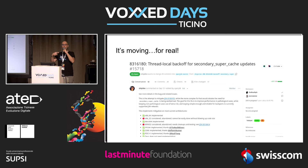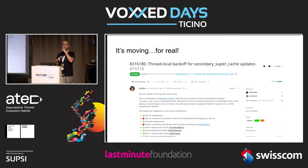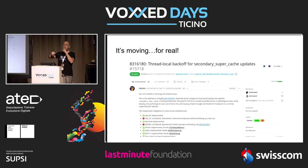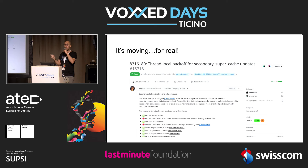There's a workaround in place: 'thread-local backoff for secondary super cache updates.' It means that if a thread exhausts the number of allowed cache invalidations, it simply stops performing them. But that's bad — it disables the fast path (where the cache sometimes works) for that thread. It's a workaround, not a solution. Libraries that haven't been fixed will still have performance problems, just without the scalability issue.